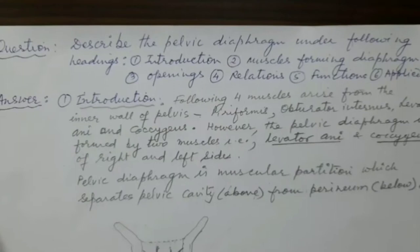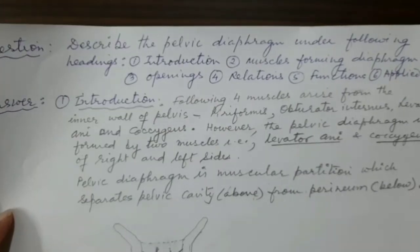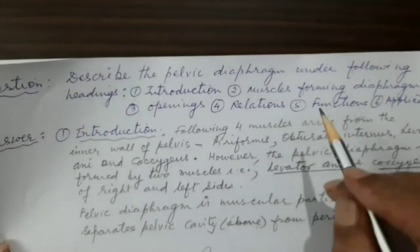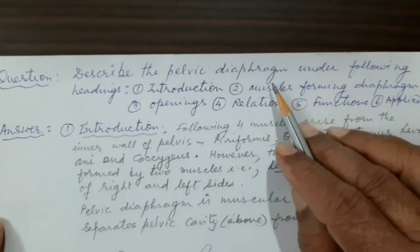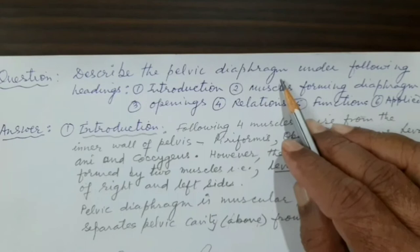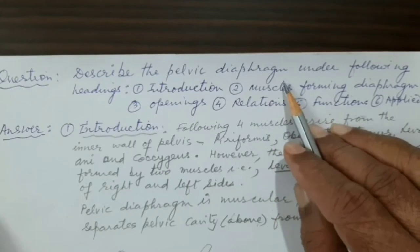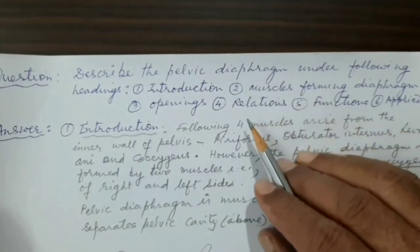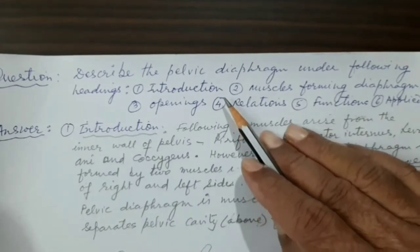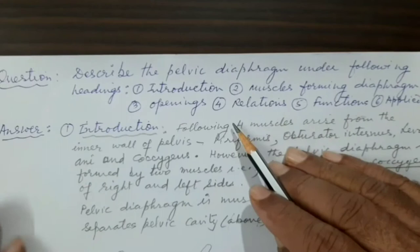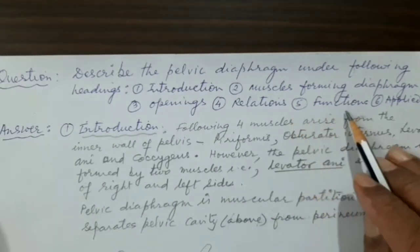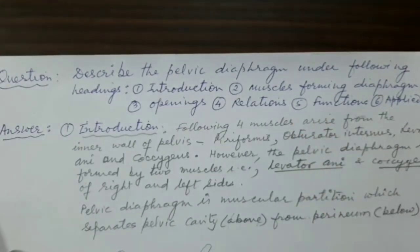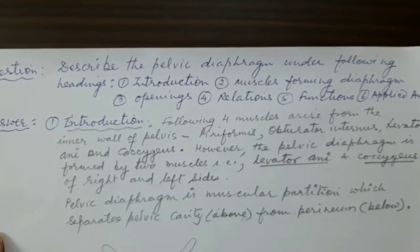Good morning students. Today's question is: describe the pelvic diaphragm. We have already learned about the thoracoabdominal diaphragm, which was a fibromuscular partition between the thoracic and abdominal cavity. Now we have to describe this pelvic diaphragm under the following headings: introduction, muscles forming the diaphragm, openings, relations, functions, and applied anatomy.